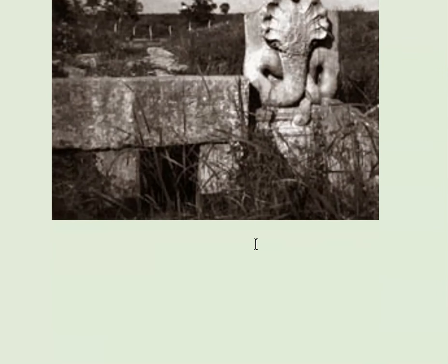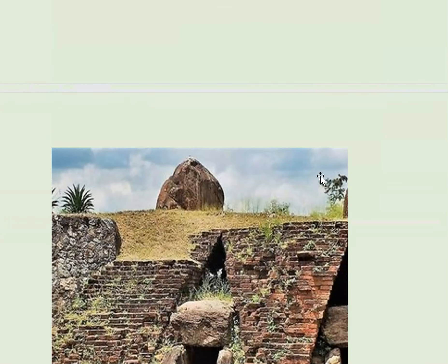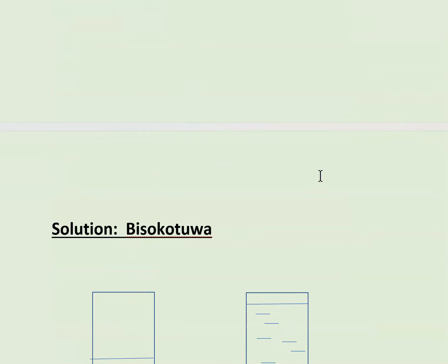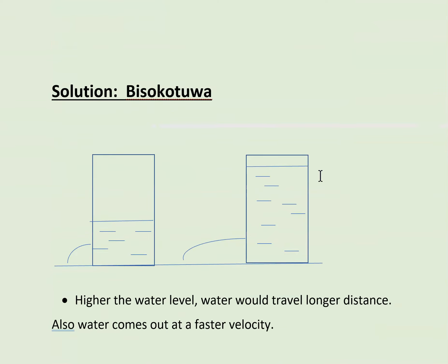There's a sluice gate with a cobra inscription, indicating that anyone who damages it will be punished. The problem with sluice gates was that when you have a high water column, the pressure would blow the sluice gate away — because they didn't have concrete at that time, and the stone and cement could not hold the water pressure.